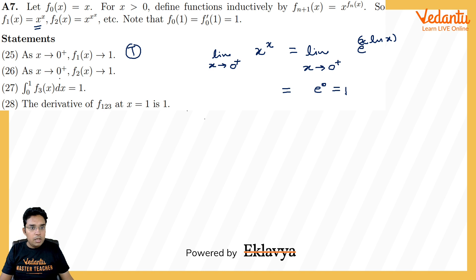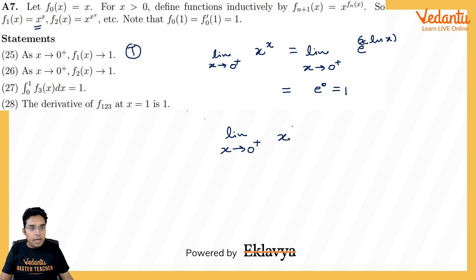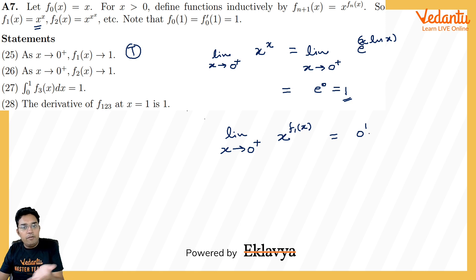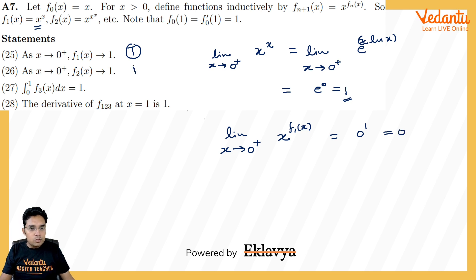Part 26: limit as x → 0+ of f₂(x) = x^{x^x}. Since f₁(x) → 1 as x → 0+, f₂(x) = x^{f₁(x)} behaves like x^1 = x → 0. This is a 0^1 form, not indeterminate, so the limit is 0. The claim appears to be that the limit equals 1, which is false.